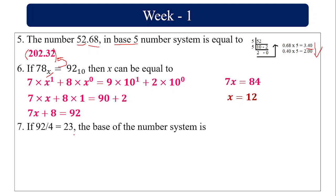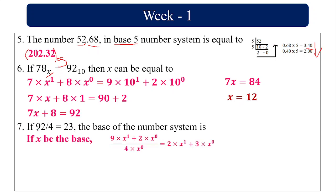If 92 ÷ 4 = 23, find the base of the number system. We take the base as X. So: (9×X¹ + 2×X⁰) ÷ (4×X⁰) = 2×X¹ + 3×X⁰. This gives (9X + 2) ÷ 4 = 2X + 3. Multiplying both sides by 4: 9X + 2 = 8X + 12, so 9X − 8X = 10, and X = 10. The base of the number system is 10, which is decimal.